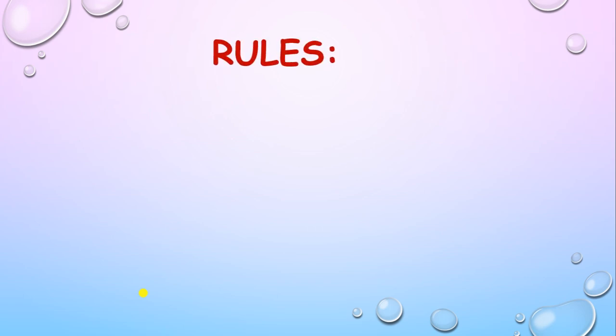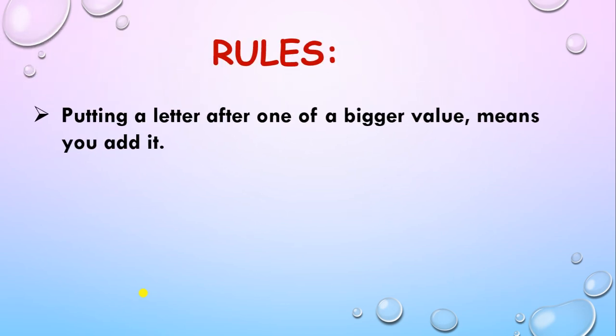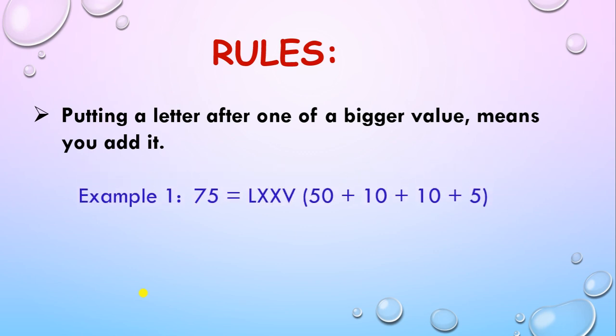Let's see the rules to write Roman numbers. The first rule: putting a letter after one of bigger value means you add it. For example, 75 is written as LXXV.